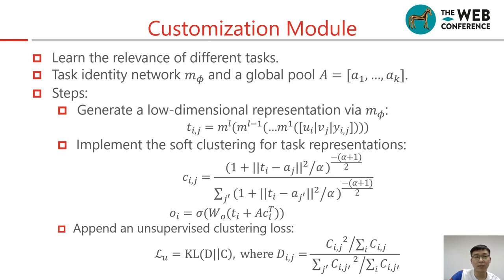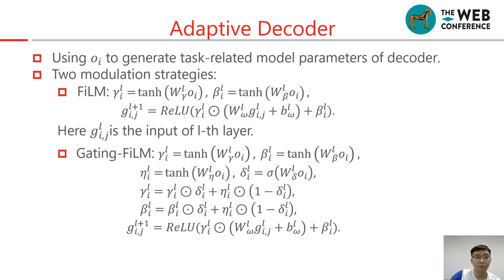The customization module is used to learn the relevance of different tasks. It includes task identity network m5 and a global codebook a. The steps are listed as follows: We first generate a low-dimensional task representation with m5. Then we implement soft clustering for task representations. Oi denotes the final task representation. We append an unsupervised clustering loss. Using oi to generate task-related model parameters of decoders, we call this adaptive decoder.